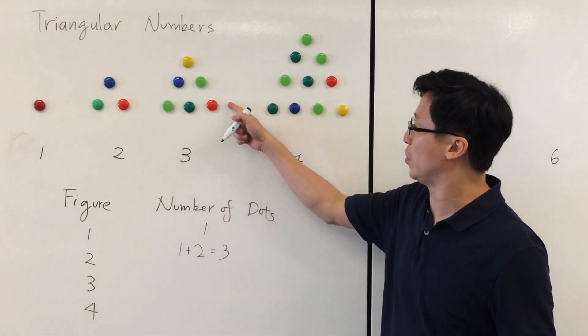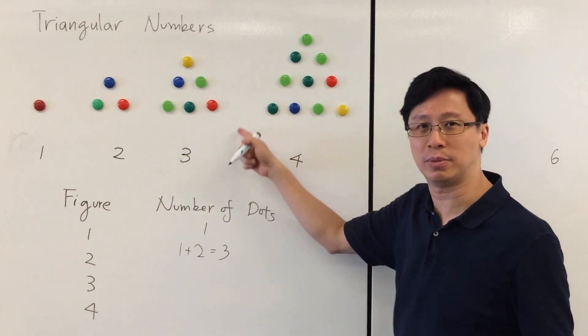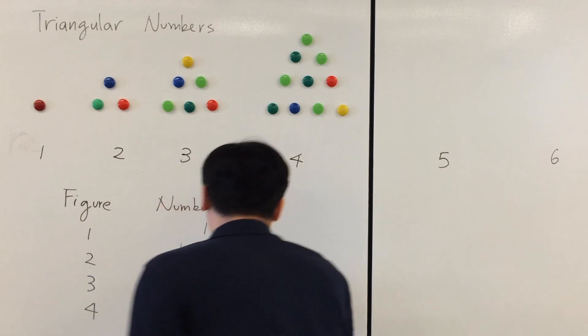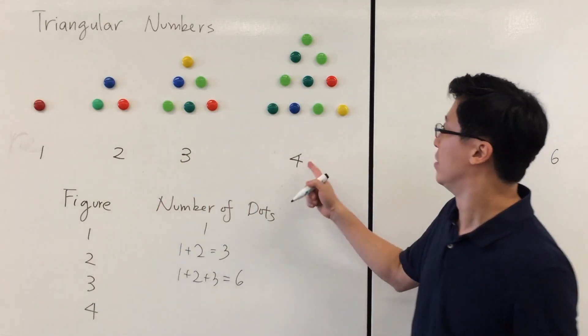For the third one, the third triangle, 1+2+3, that is we have six.